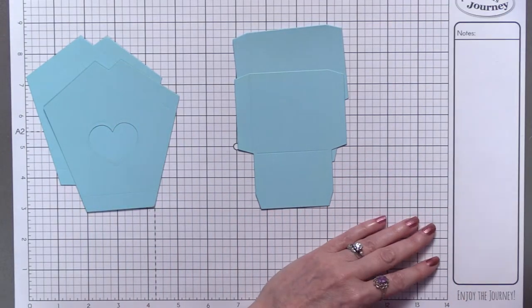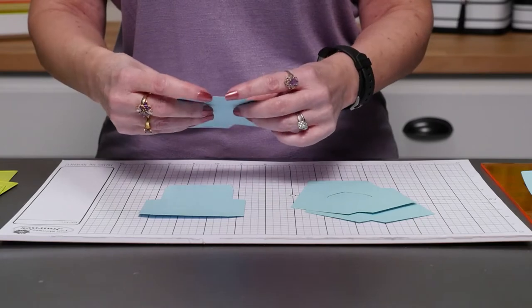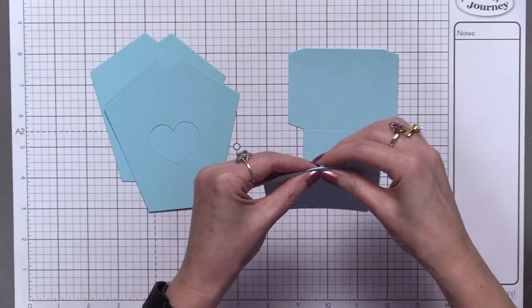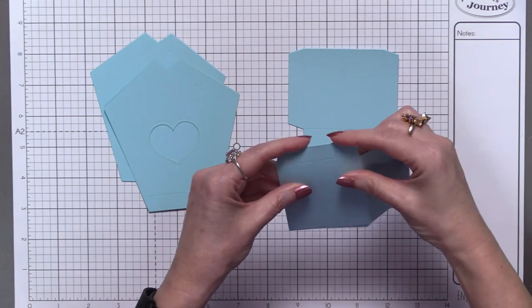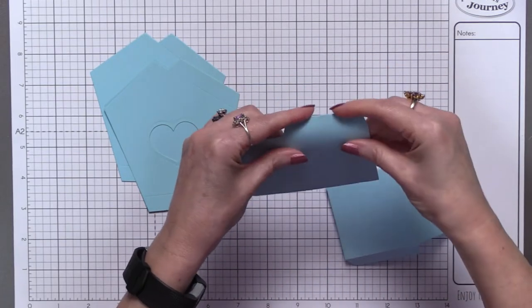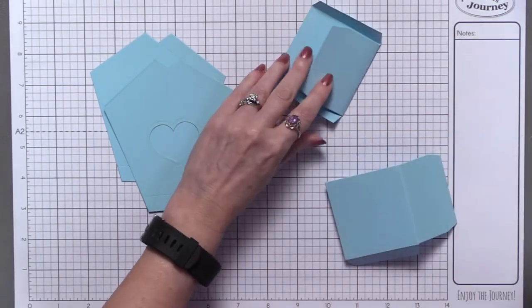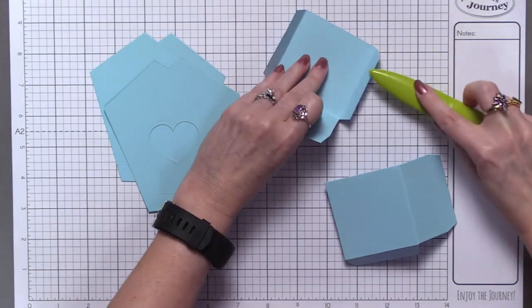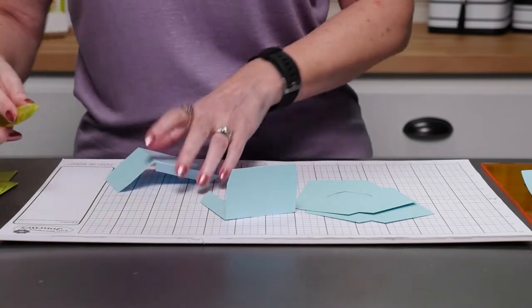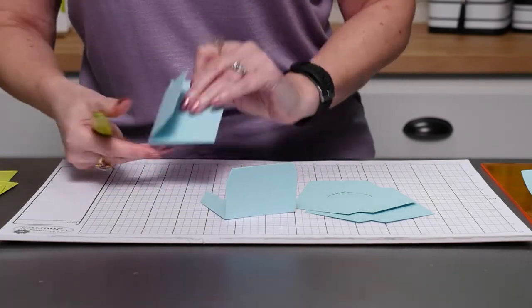Now when we assemble these, you're going to set the roof part aside for now. Wherever you see a scored line is where you're going to want to make your folds. Whenever you're dealing with a box type of project, you're going to want to make sure you use your crease tools to get nice crisp folds because you want your box to be at 90 degree angles.